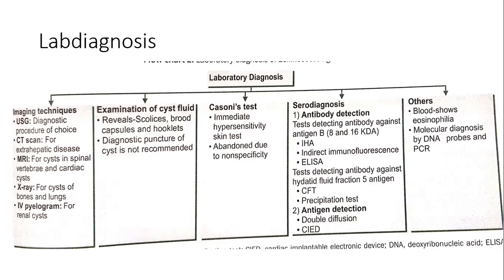Examination of cyst fluid reveals scolices, brood capsules, and hooklets. Diagnostic puncture of the cyst is not recommended. The hydatid fluid, which contains scolices, brood capsules, and hooklets, is collected for analysis.